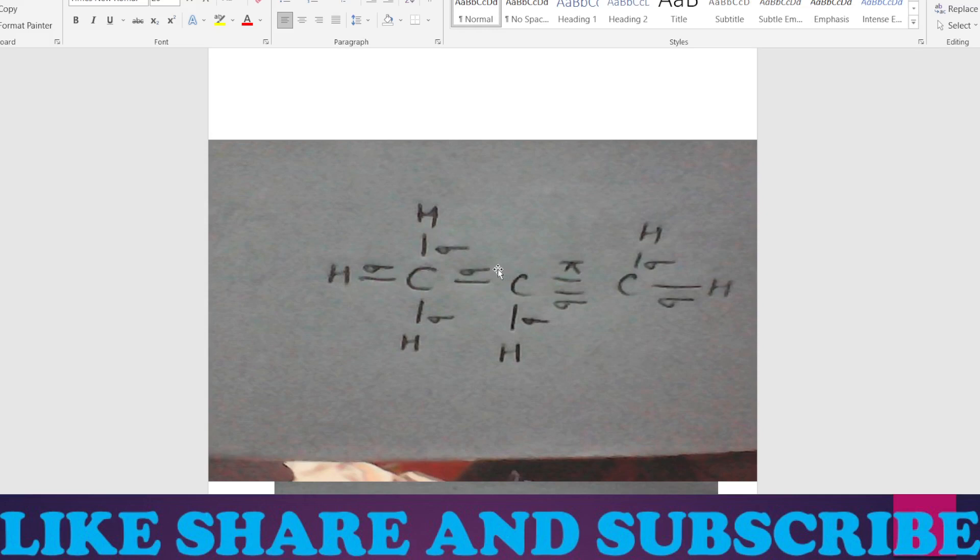We have seven single bonds: one, two, three, four, five, six and seven, and one double bond. We know that in each double bond, one is sigma and another is pi. So here you can count we have total eight sigma bonds and one pi bond.